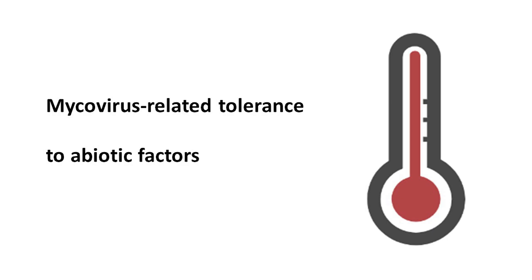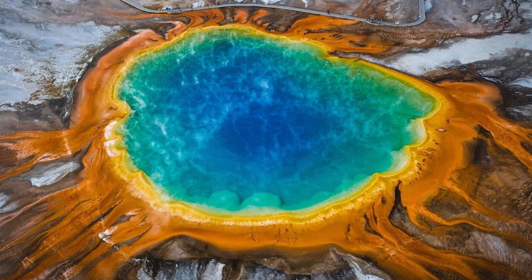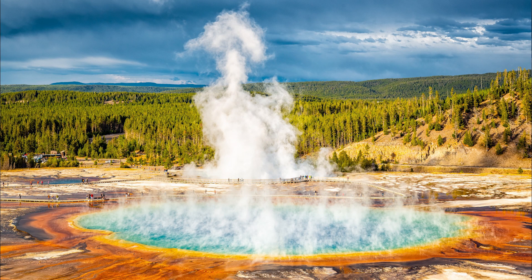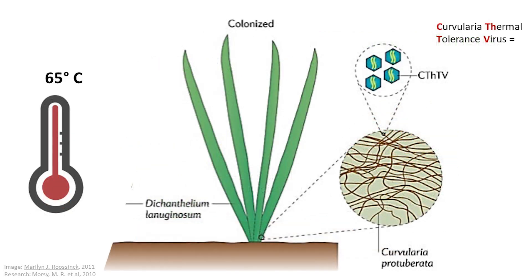Mycoviruses can increase the tolerance of fungal hosts to abiotic factors. Curvularia thermal tolerance virus is an extraordinary virus that gives benefits not only to the host fungus Curvularia protuberata, but also to the plant that is colonized by the fungus. The tropical hot spring panic grass Dichanthelium lanuginosum usually grows in geothermal areas of Yellowstone National Park in the United States and is able to withstand really high temperatures. It was shown that neither a virus-free fungus nor a plant infected by a virus-free fungus was able to survive at temperatures exceeding 38 degrees Celsius. But the symbiotic association of mycovirus, fungus, and plant allows both to survive at extreme temperatures up to 65 degrees Celsius.